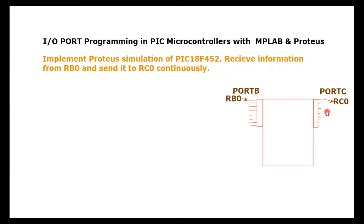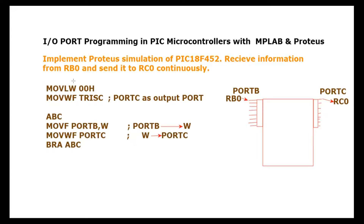Let's write and discuss the code for this task. The first instruction is MOVLW zero-zero, which means the working register becomes zero, and then we move it to TRISC. Sending zeros to TRISC means Port C will become the output port.